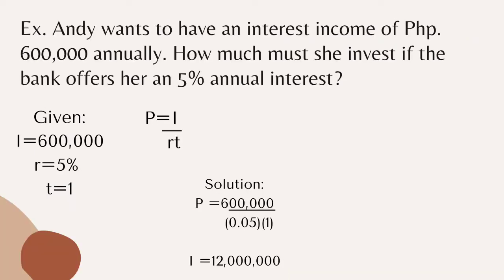Second example: Andy wants to have an interest income of 600,000 annually. How much must she invest if the bank offers her 5% annual interest? The given: interest is 600,000, rate is 0.05, and time is 1. The formula is P equals interest divided by rate times time. Solution: 600,000 divided by 0.05 times 1. First, multiply the denominator: 0.05 times 1 equals 0.05. Then divide 600,000 by 0.05, which equals 12,000,000.